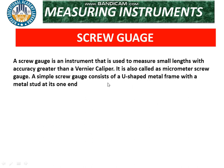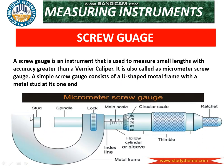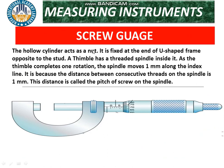The screw gauge consists of a U-shaped metal frame with a fixed metal stud. There is a spindle connected to a circular scale which can rotate clockwise or anti-clockwise. A hollow cylinder acts as a nut, fixed at the end of the U-shaped frame opposite to the stud. The spindle is threaded inside this cylinder.